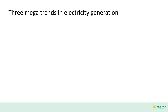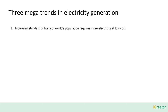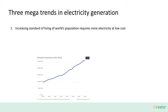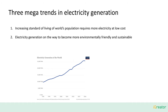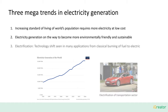Electricity generation is in the spotlight of current global developments and this is due to three mega trends. First, the world's population strives for higher standard of living which requires more electricity at low cost. Worldwide electricity generation is constantly increasing, reaching more than 25,000 terawatt hours annually. Second, it is on the way to become more environmentally friendly and sustainable. The main focus here is on CO2 emissions. This can only be achieved by changing the way how electricity is produced. And finally, electrification. Moderated by various reasons like cost, performance and CO2 emissions, we see technology shifts happening in many applications away from burning of fuel to the use of even more electricity as an energy source. The stepwise electrification of the transportation sector is just one example.